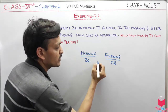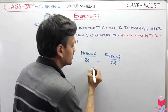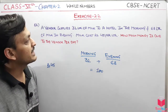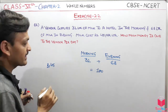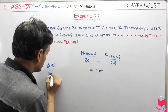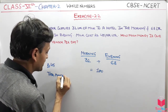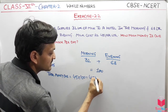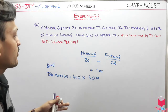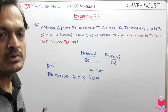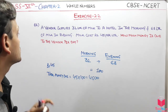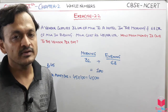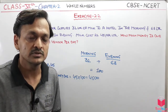तो क्या करेंगे — simple, पहले इसको add करेंगे ताकि total दूध कितना है। तो 32 plus 68 equals 100. इससे multiply कर देंगे — 45 multiplied by 100 — यह सीधा answer आ गया। हमें कोई property भी नहीं लगानी पड़ी। यह हो गया Question number 6। अब Question number 7 पर चलेंगे — जल्दी से करो, ताकि यह exercise खतम हो जाए। Okay, thank you.